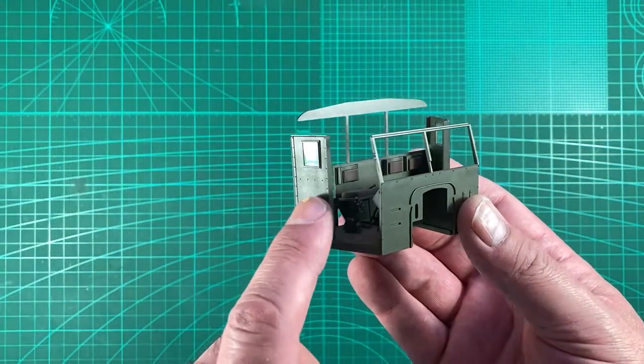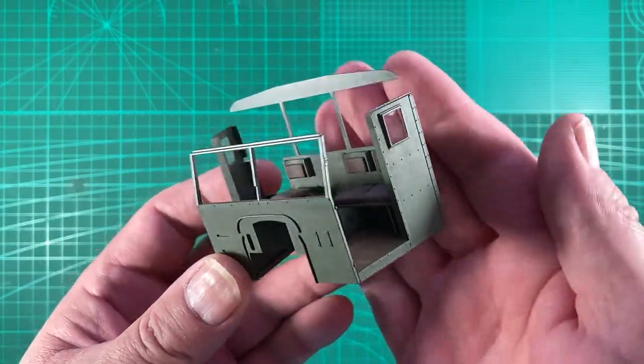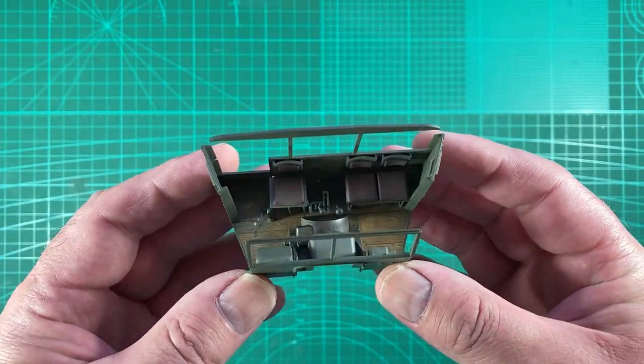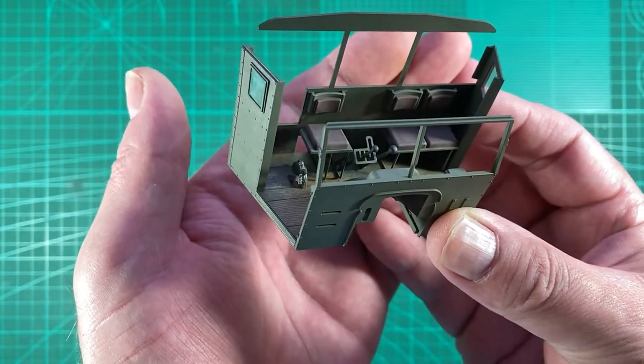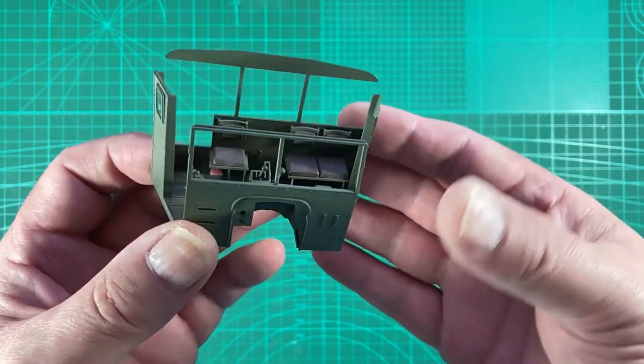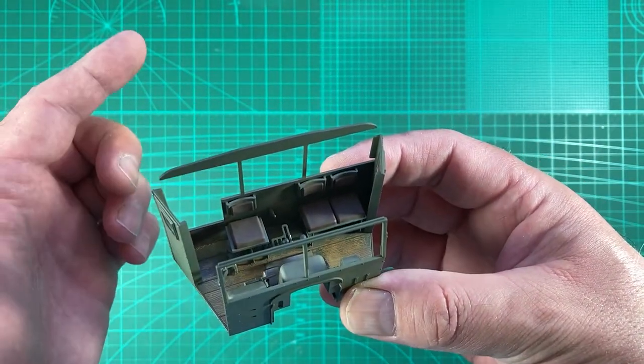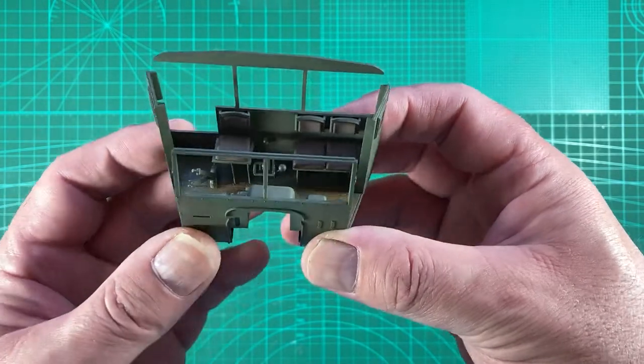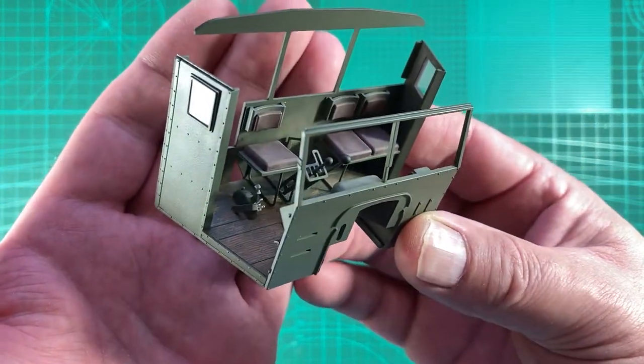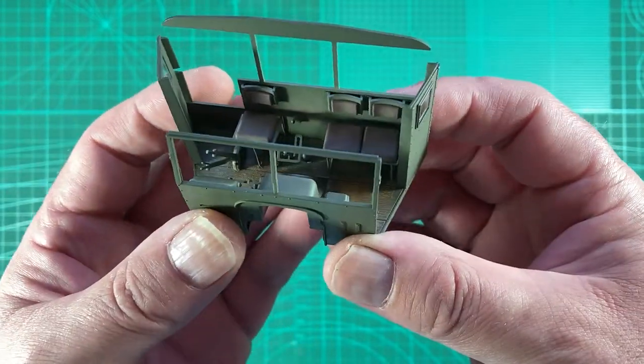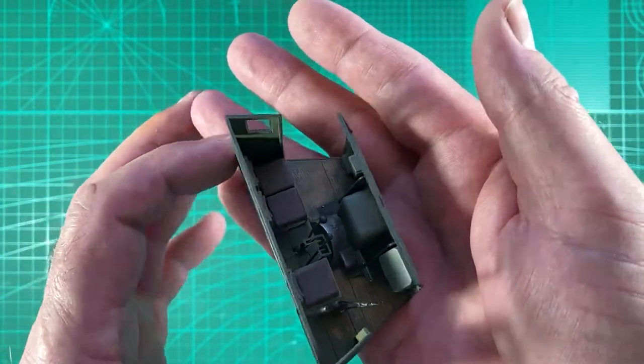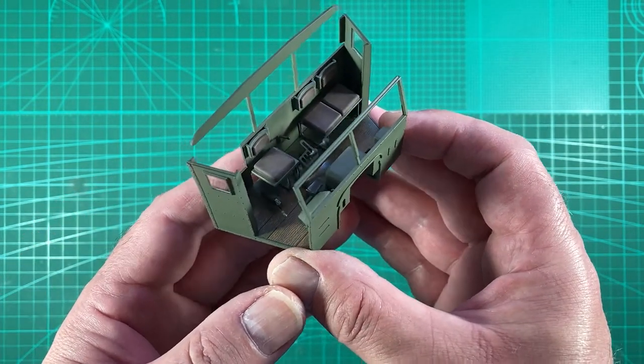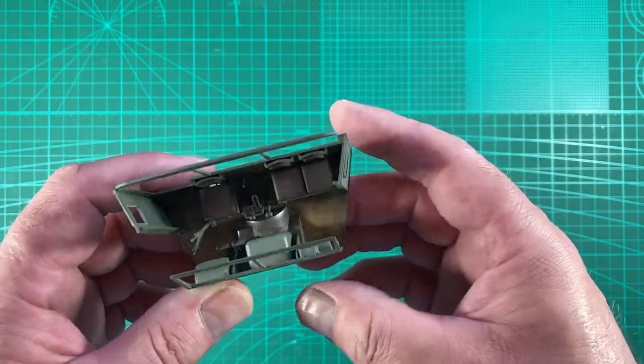So unfortunately I lost the footage of attaching the sides. It was a pretty straightforward exercise anyway. So that's the weathering of the cab interior done with the pigments. What I'll do is, when I come to do the rear crew area in the cargo bed, I'll weather it using the same process I've just shown. I might come back into the front and just put a bit more in. The effect wasn't as heavy on the floor as I was expecting, and the seats are heavier than I was expecting. So I'll try and probably reduce that a bit more on the seats and increase the dirt and dust on the floor.